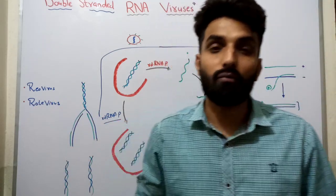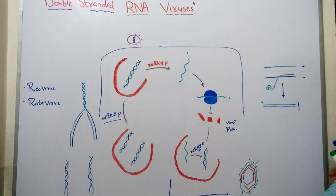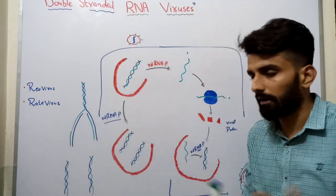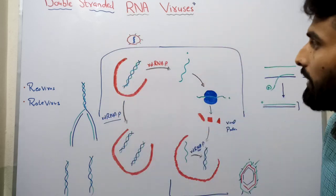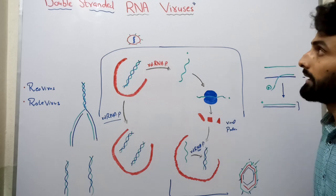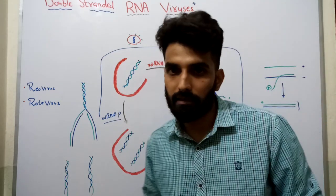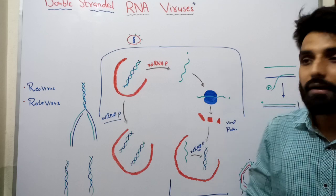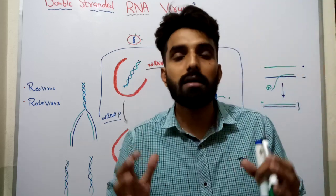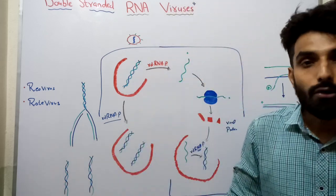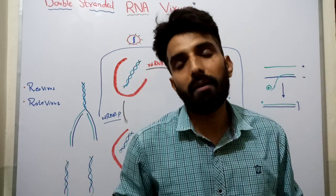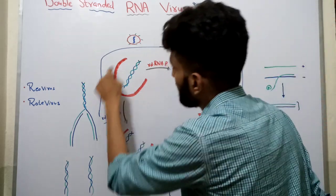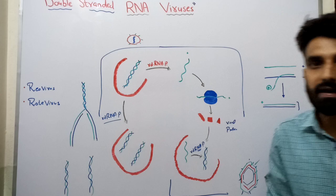Reoviruses are also a very common example. Now let's talk about the replicating cycle. The processes of attachment, penetration, and release of genome have been explained many times. The key point is that double-stranded RNA viruses are a little bit different from single-stranded RNA viruses, because double-stranded RNA does not occur in eukaryotic cells. This means they will easily be identified by the host cell and destroyed.